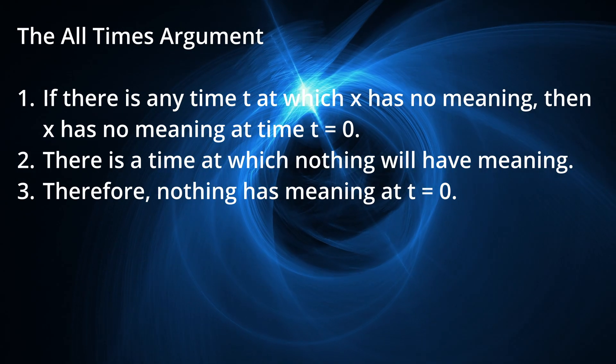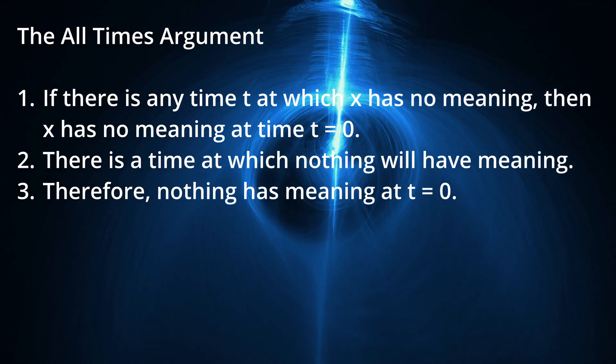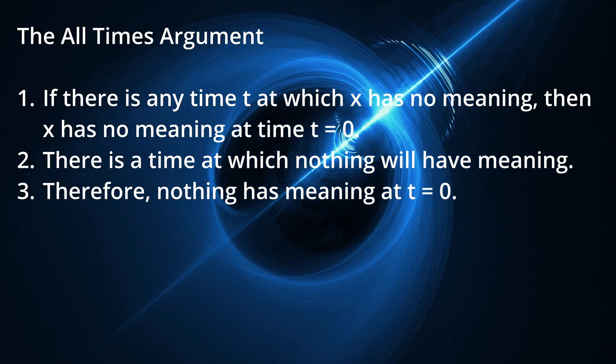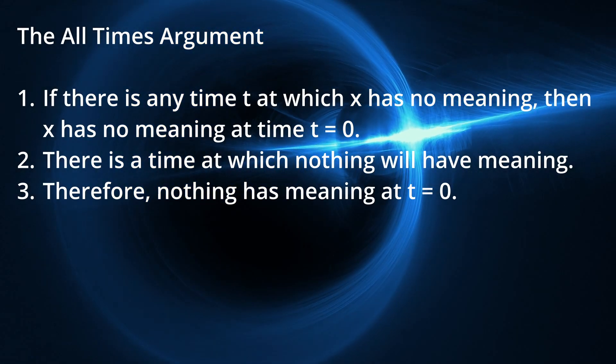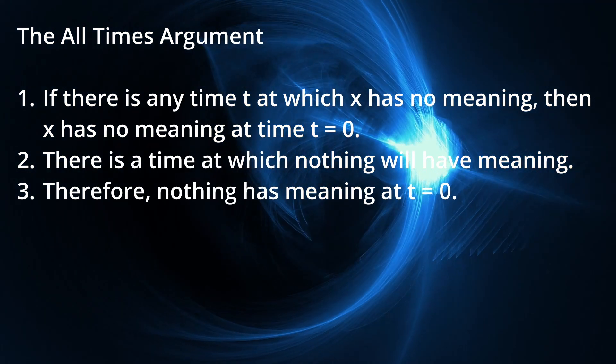Again, we can see the problem with this by expressing it formally. One, if there is any time t at which x has no meaning, then x has no meaning at time t equals 0. Two, there is a time, namely the time of the heat death of the universe, at which nothing will have meaning. Three, therefore, nothing has meaning at time t equals 0, or the present moment.